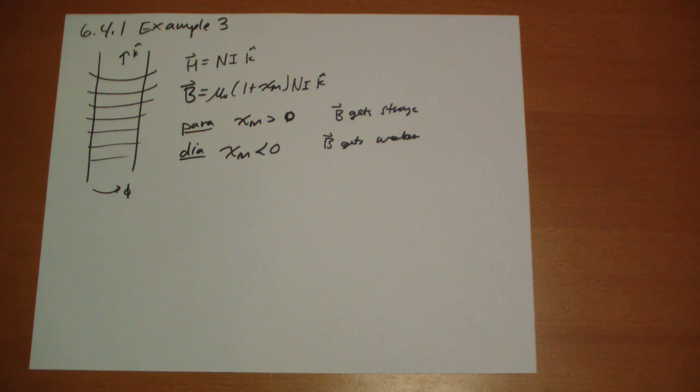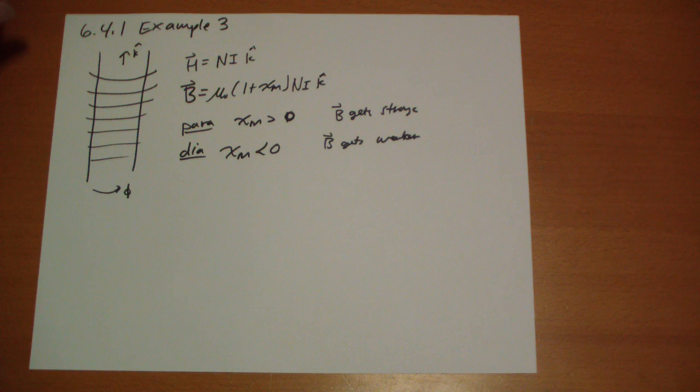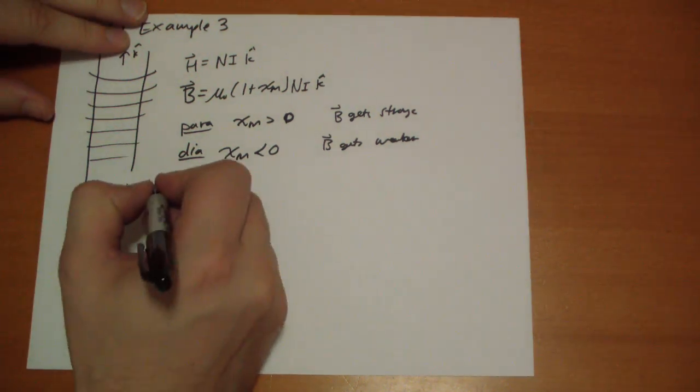And so the surface current, we're going to have a surface current that either aligns with the looping wires or opposes it. And we can calculate the surface current.